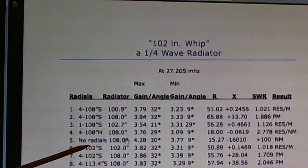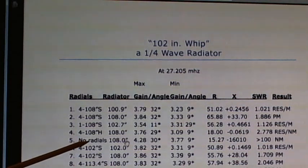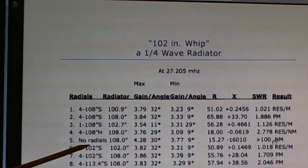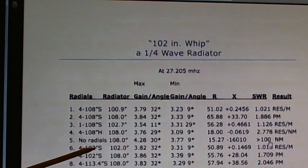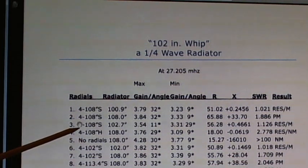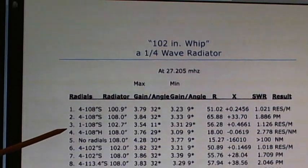And the S out here at the end of the radials, in this case, four 108 inch radials, S means they're slanted down. H means they're horizontal. And it's the only two varieties I use, other than no radials at all. I gave you a model of a no radial quarter wave antenna just to see how bad of a match you wouldn't even imagine how bad it can be.